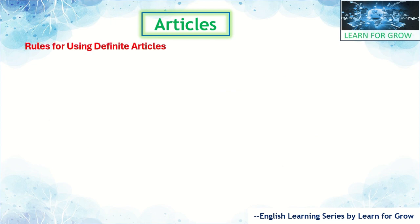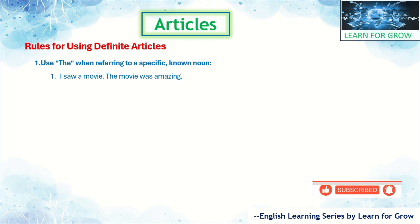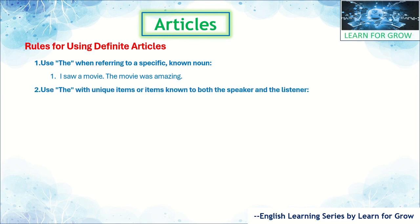Let's see the rules and regulations of definite articles. The first rule is: use 'the' when referring to a specific noun. For example, 'I saw a movie' — then 'the movie was amazing.' When a specific noun was mentioned, we can use 'the.' The second rule: use 'the' with unique items or items known to both the speaker and listener. For example, 'The sun sets in the west' — the sun is unique on Earth, that's why 'the' is used.